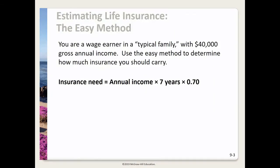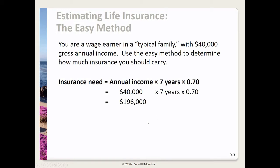In this first example we're using the easy method. You are a wage earner in a typical family with $40,000 gross annual income. The formula is gross annual income times seven years at 70%. Plugging in $40,000 times 7 times 70%, we get $196,000 for the level of insurance needed.